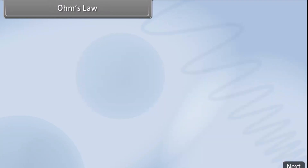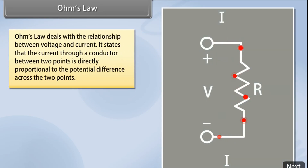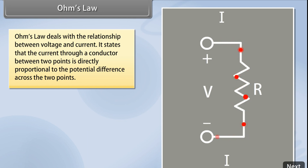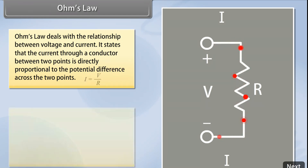Ohm's law deals with the relationship between voltage and current. It states that the current through a conductor between two points is directly proportional to the potential difference across the two points.